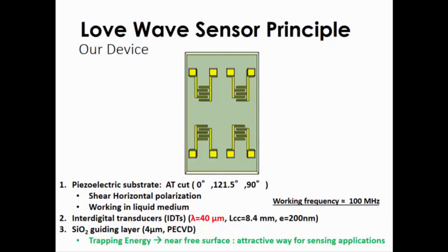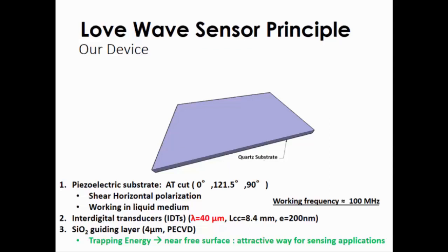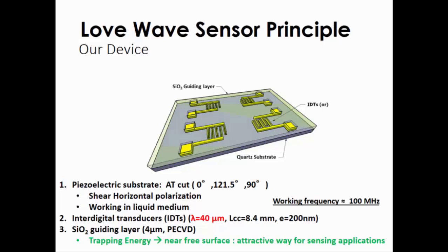Our device is presented here. It's a quartz substrate with an AT cut which allows us to have a shear horizontal polarization and to work in liquid medium. On this quartz substrate, we deposit an interdigital transducer in gold with a wavelength of 40 micrometers here and a distance here for the acoustic path near 8 millimeters, and the thickness of the IDTs is about 200 nanometers. After that, we deposit by PECVD a silicon dioxide guiding layer about 4 micrometers. The particularity of this kind of wave is that it's possible to trap the acoustic energy inside the guiding layer. By doing this, we will perturbate this energy close to the surface, to the free surface. Our working frequency is around 100 MHz.